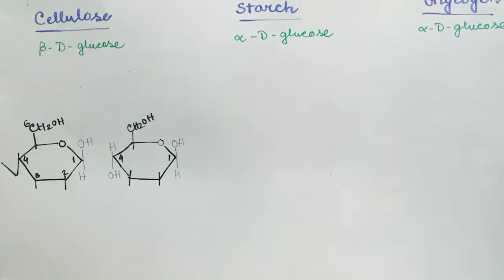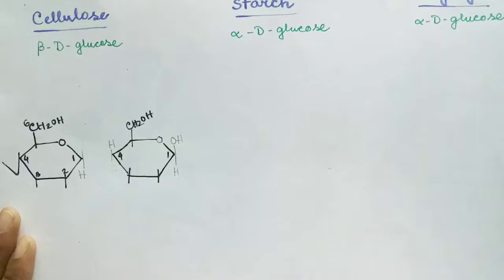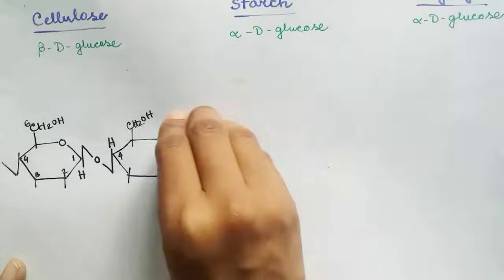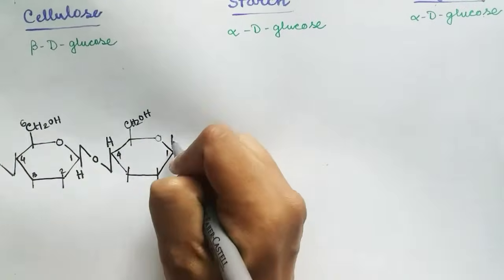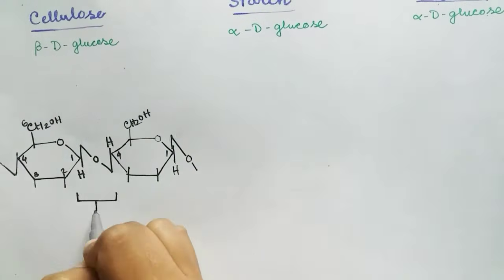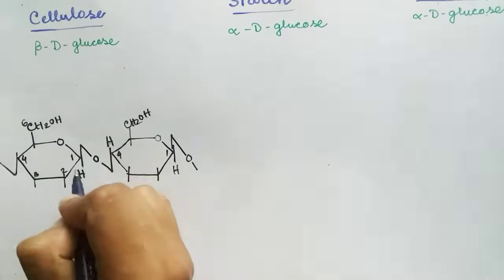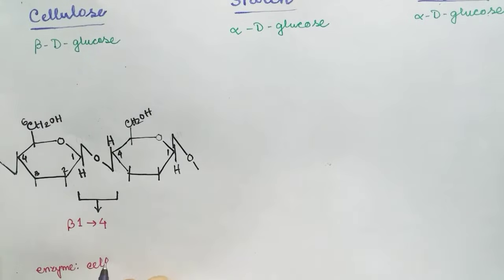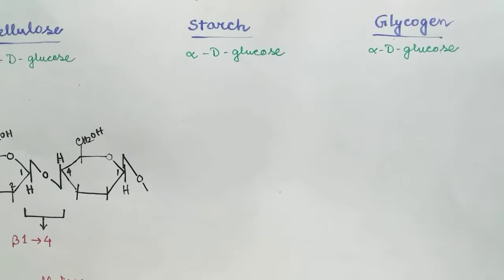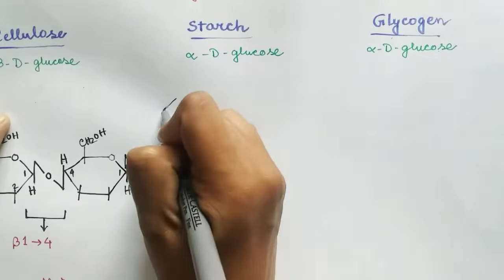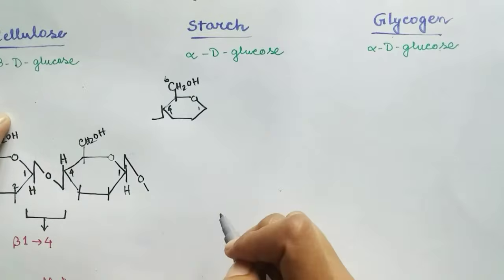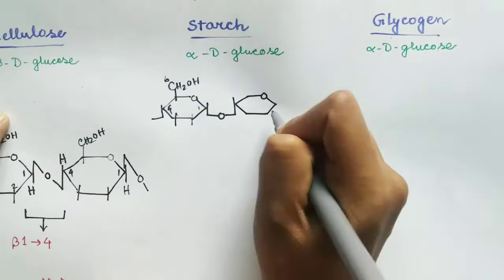The glycosidic bond in cellulose is between the anomeric carbon of one beta glucose and the fourth carbon of another beta glucose, continuing throughout the whole polymer. This bond is named the beta 1-4 glycosidic bond. The only enzyme that can break this bond is cellulase, and humans do not have the cellulase enzyme, so we cannot break down cellulose.